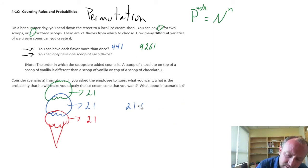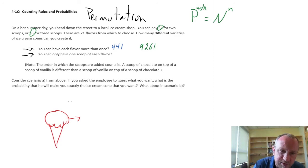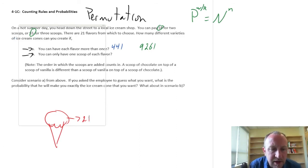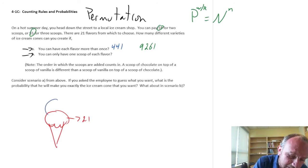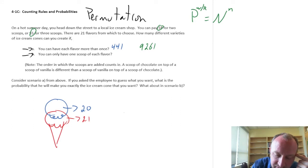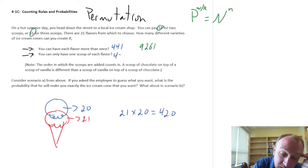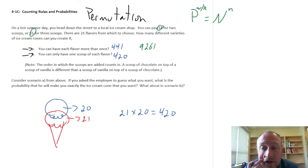Now for Part B, this is a more common counting problem with permutations — repetition isn't allowed. For that first scoop of ice cream, I still have 21 flavors. But now for the second scoop, if I already picked vanilla, vanilla doesn't exist anymore — it's no longer an option. So that second scoop only has 20 flavors to choose from. Without being able to reuse that same value, now I have 21 times 20, which is 420 different varieties of ice cream cone if I pick two out of those 21 flavors.